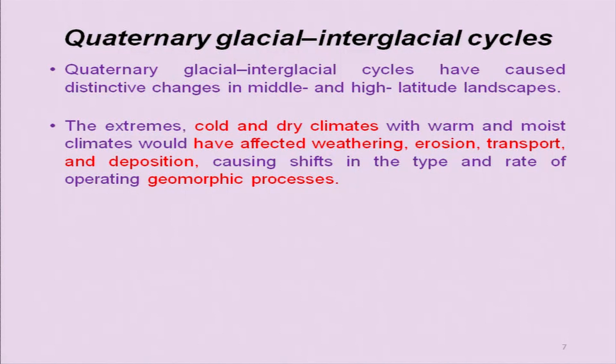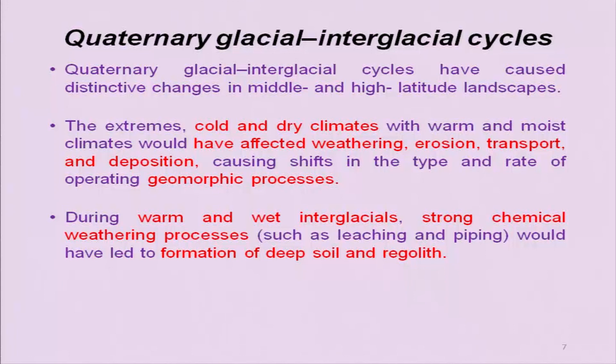Understanding glacial landforms is important because if you move towards a warmer climate, snow melts and there will be glacial retreat — more water on the Earth's surface, which will affect weathering of material on the Earth's surface, leading to erosion and more sediment supply. This will also create loading and unloading of areas as well as sea level rise. Overall, geomorphic processes will be affected during warm and wet inter-glacials.